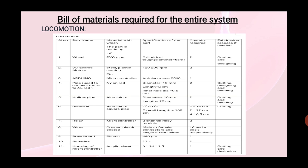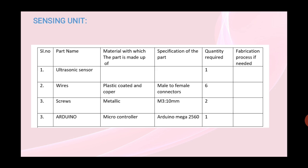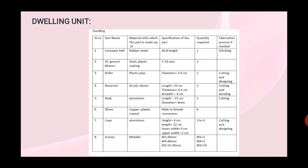Next is bill of materials. For locomotion we are using wheels which are made up of PVC pipes, DC geared motors, Arduino, pipes, hollow pipes, reservoirs, relay, wires, breadboard, batteries, housing of the microcontroller. For sensing unit: ultrasonic sensor, wires, screws and Arduino. For dwelling unit: conveyor belt which is made up of rubber sheet, DC gear motors, rollers, reservoirs, rods, wires, cups which are made up of aluminium and screws.